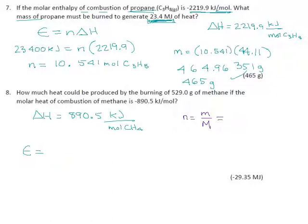So for this, our mass of methane is 529.0 grams. Our molar mass for methane, which is CH4, is 12.01 plus 4.04, which is 16.05 grams per mole. Which means our number of moles, according to the calculator, is just almost 33 — 32.9595 moles of methane.